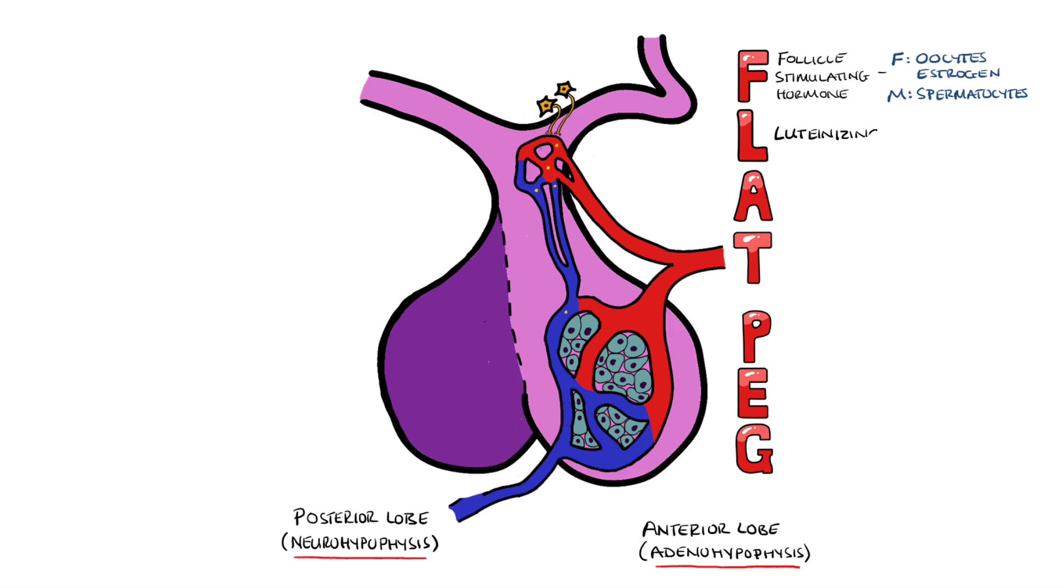L is for luteinizing hormone, which stimulates production of progesterone and estrogens in females, while stimulating testosterone production in males.